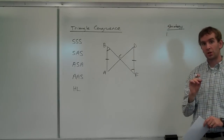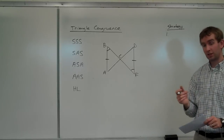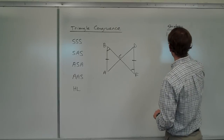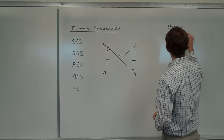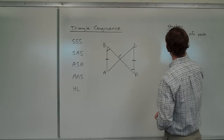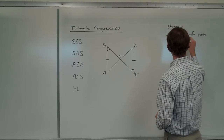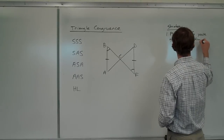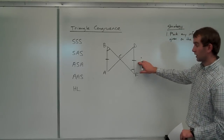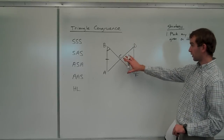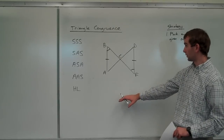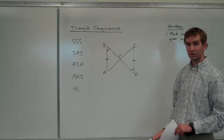Step one: mark down any information on your diagram that's given to you. In this case, it's already marked down on the diagram, so that's taken care of. But sometimes they may give you a totally blank diagram with no markings on it and just say, here's what you're given: AB is congruent to DF, angle B is congruent to angle F — and then you'd have to mark that on there. So do that first.